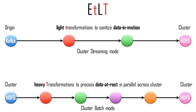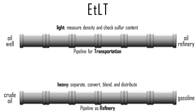Continuing with that example, you can run StreamSets in cluster batch mode on the raw data that streamed into Hadoop earlier. Under the covers, StreamSets launches MapReduce jobs to process the raw data into a refined asset for analytics. Coming full circle back to the start of the video, small-T processes are like oil pipelines used to transport crude to a refinery — density and sulfur content are quickly checked before oil is pushed along. A big-T process is like an oil refinery pipeline, where all the intensive transformations are performed on each batch of crude to convert it into gasoline for consumption at gas stations.